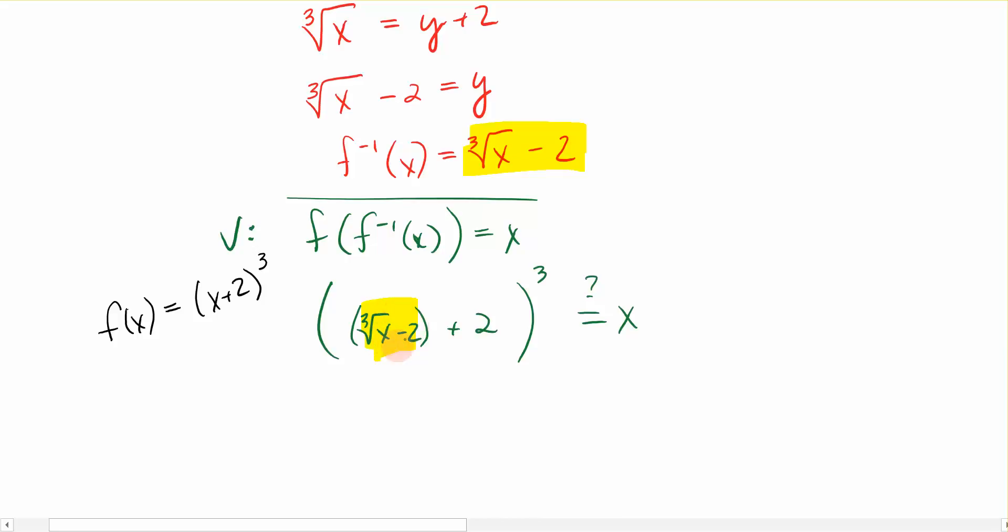So I have the cubed root of x minus 2 plus 2 raised to the third power. Well, although I surrounded this with parentheses, it's raised to the first power, so I can just simply remove the parentheses and simplify. So I would have the cubed root of x minus 2 plus 2, so that just disappears, raised to the third power. So the cubed root of x raised to the third power is just simply x, which is the x that I wanted to know.